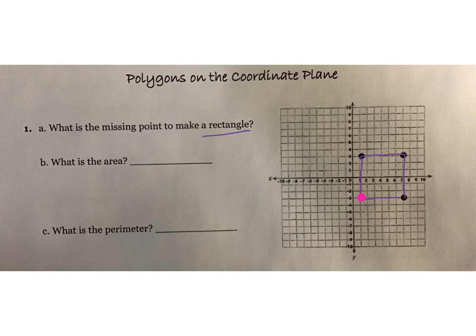Remember, you're counting boxes. So counting across we get 6, and the opposite side is also 6. Then counting the other dimension we get 6, and the opposite side is also 6. So obviously for this one, it's making a square because it's going to be 6 by 6. But remember that all squares are rectangles.